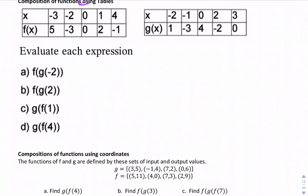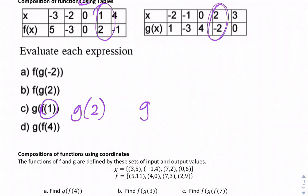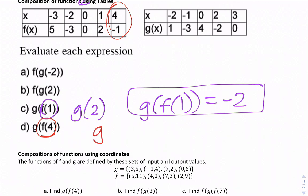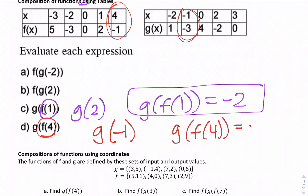Now let's find g(f(1)). f(1) means plug in 1 — the output is 2. Now find g(2), which is −2. So g(f(1)) = −2. One more: g(f(4)). Start with f(4) — output is −1. Then find g(−1), which is −3. So g(f(4)) = −3.